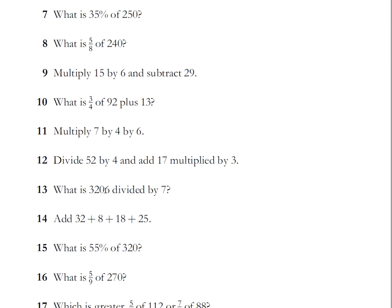Multiply 7 by 4, 28. You've got to do three multiplications here. 7 by 4 is 28, 28 by 6 is 168. I did 20 by 6, 120, plus 6 times 8, 48, 168. Divide 52 by 4, 13, add 17 multiplied by 3. You've got to do the order of operations here so this is 13 plus 51 which is 64. This one's a little bit hard, 3206. I would go up to 40 times 7 would be 280, so 400 times 7 would be 2800, what does that leave us with, 406, that'll be 50 times 7, 350, so it'll be 58, so 458.